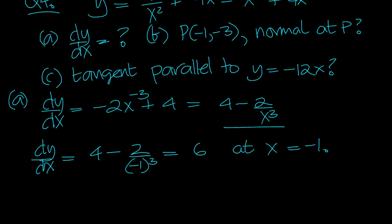So the normal has gradient -1/6. So y minus (-3) is equal to -1/6 times x minus (-1) at point P.